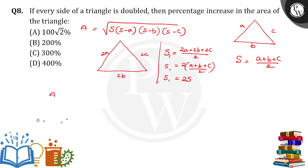Now area of the other triangle, A dash, is equal to square root of 2S into 2S minus 2A into 2S minus 2B into 2S minus 2C.